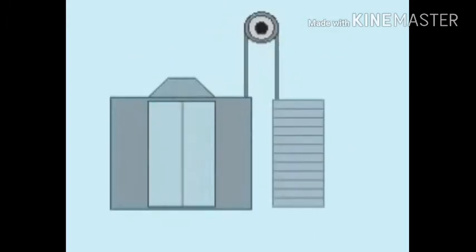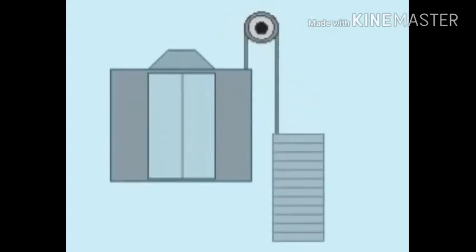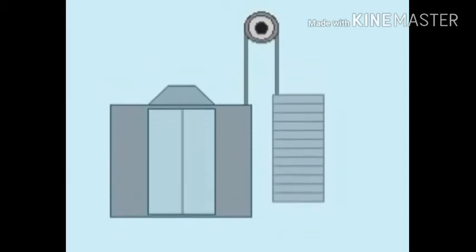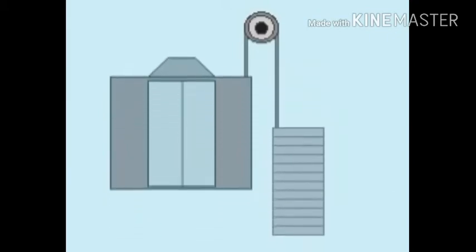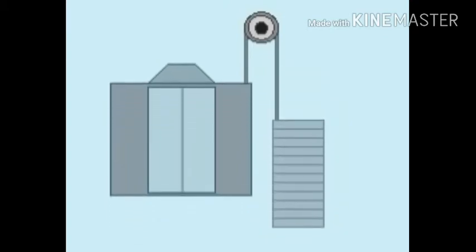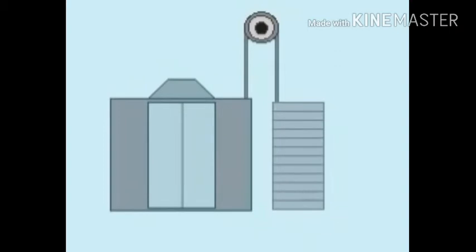An elevator uses a single pulley setup in its handling of weight. A cable attached to the elevator runs over a pulley at the top of the elevator shaft and down to a counterweight. The gravity force on the counterweight balances the gravity force on the elevator.